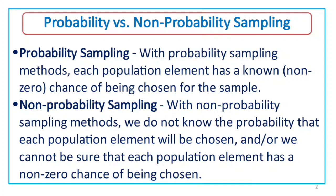With Probability Sampling Methods, each population element has a known chance of being chosen from the sample. Probability Sampling is also known as Random Sampling. We will discuss five examples in the slides.